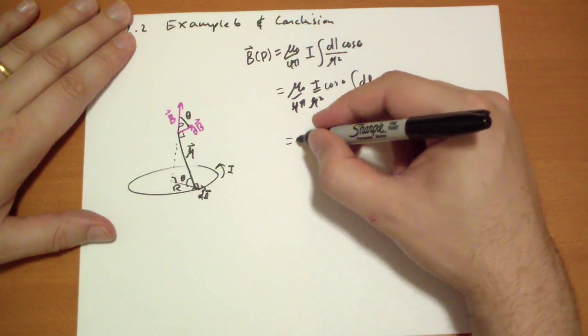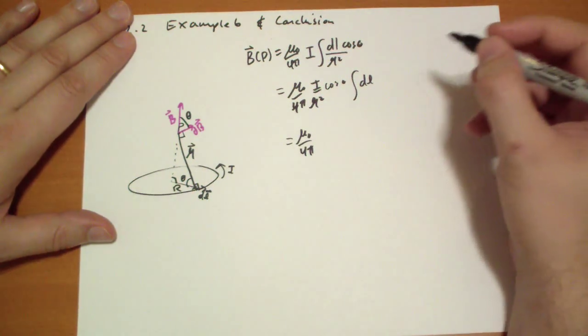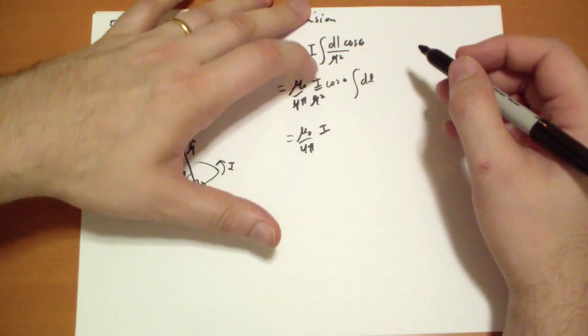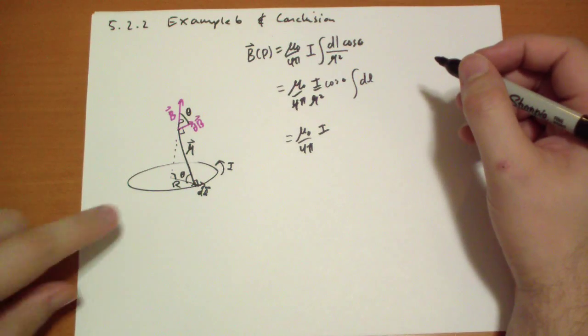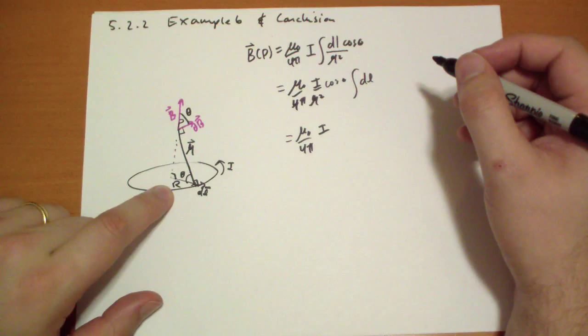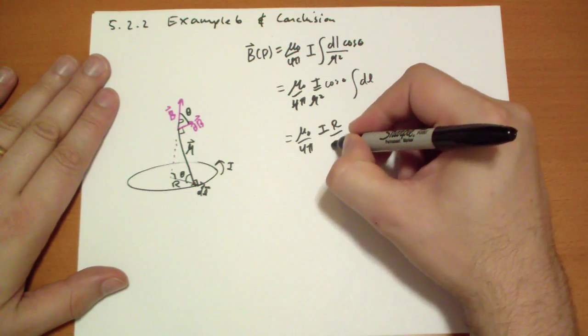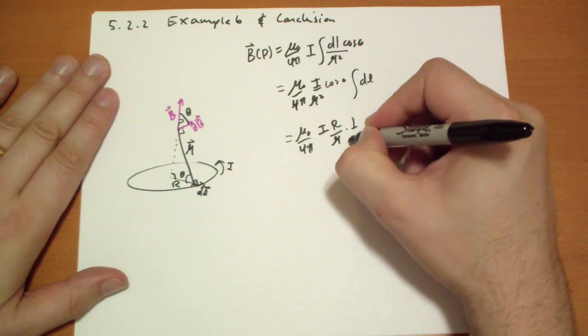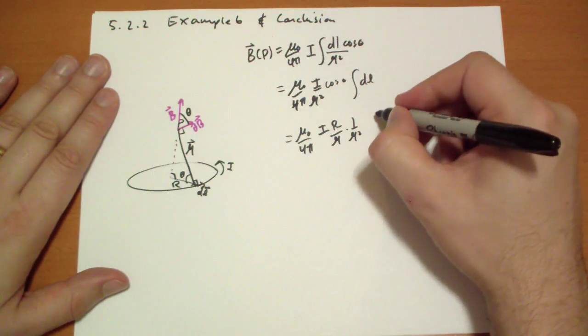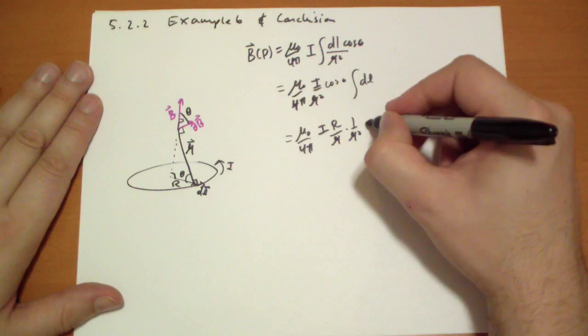Well, now we have mu naught over 4 pi, I. What is cosine theta? Cosine theta is just R over the length of R. So we get R over R times 1 over R squared, so we have R cubed on the bottom. And what's the length of the circle? 2 pi R.